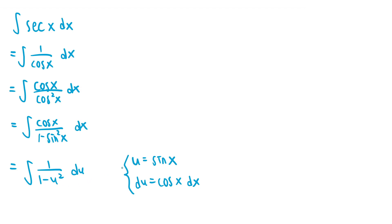Since u equals sine of x, we can factor the denominator, 1 minus u squared, into 1 plus u times 1 minus u. So we can rewrite this as the integral of 1 over 1 plus u times 1 minus u du.